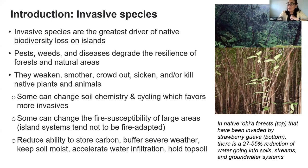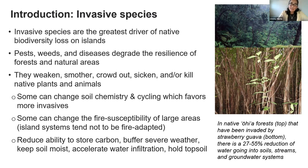Some species can change soil chemistry and nutrient cycling in forests, which actually favors more invasive species moving in. Some invasives can change the fire susceptibility of large areas — we see this in our grasslands — and island ecosystems tend not to be fire adapted. They can reduce the ability of forests to store carbon, buffer severe weather, keep the soil moist, and attract additional moisture. Invasive species harm the ability of forests to accelerate water infiltration and hold topsoil.